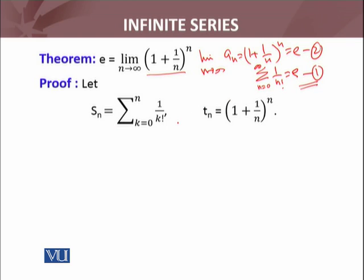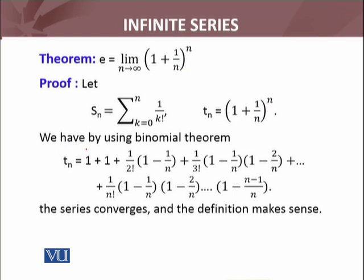We use the infinite series for defining the number e, and consider the sequence of partial sums. The nth term of the partial sum sequence is s_n. Now we also consider the sequence whose nth term is t_n = (1 + 1/n)^n.